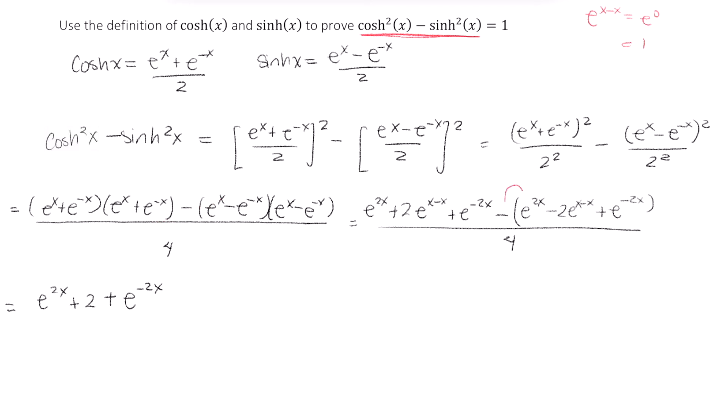And continuing, we're going to distribute this negative to each of the terms inside the parentheses. So this is minus e to the 2x, and then we have a negative times a negative is a positive 2e to the x minus x. So that's just 2 because that e to the x minus x becomes a 1.